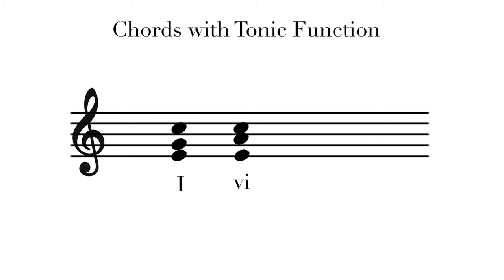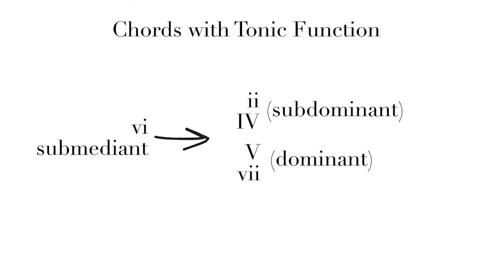The VI can also be substituted for the tonic in the middle of a progression to avoid using the tonic. It is also the relative minor of the major key, which means that VI and I also share a very close relationship. In terms of progression, the VI can also go to any subdominant or dominant function chord, much like the III.